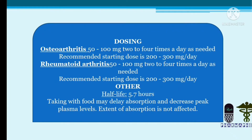Regarding dosing criteria: Flurbiprofen is used for osteoarthritis and rheumatoid arthritis — both inflammatory conditions. The starting dose is 200 to 300 mg per day, with a maintenance dose of 200 mg twice daily (BD) or four times daily (QID) as needed. Taking it with food may delay absorption and decrease peak plasma levels, though the extent of absorption is not significantly affected.